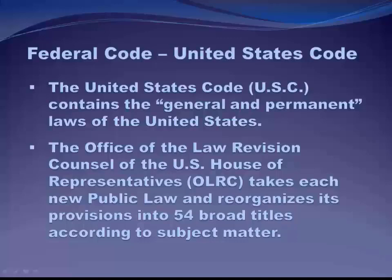Since the code did not get submitted to Congress, it never became a positive form of law. Instead, the Statutes at Large remain the positive form of law for federal legislation. The code currently is comprised of 54 titles. A complete new edition is printed by the Government Printing Office (GPO) every six years, with five annual cumulative supplements printed in the intervening years.